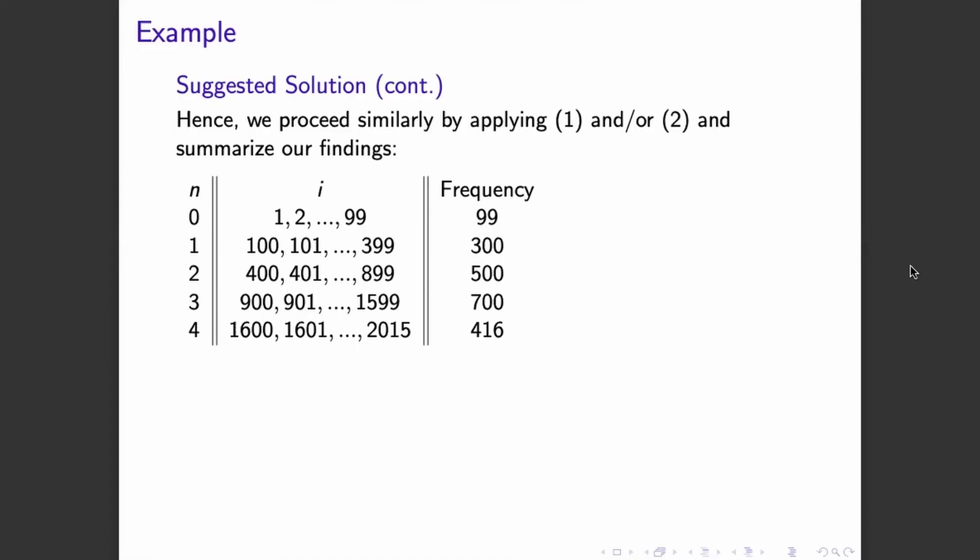So once we have this summary, we can now actually solve the summation from 1 to 2015. So we have that the summation is we just multiplying the frequency of each value of n, and we add the results, we should get 5064. So 5064 is now the final answer to our example problem.